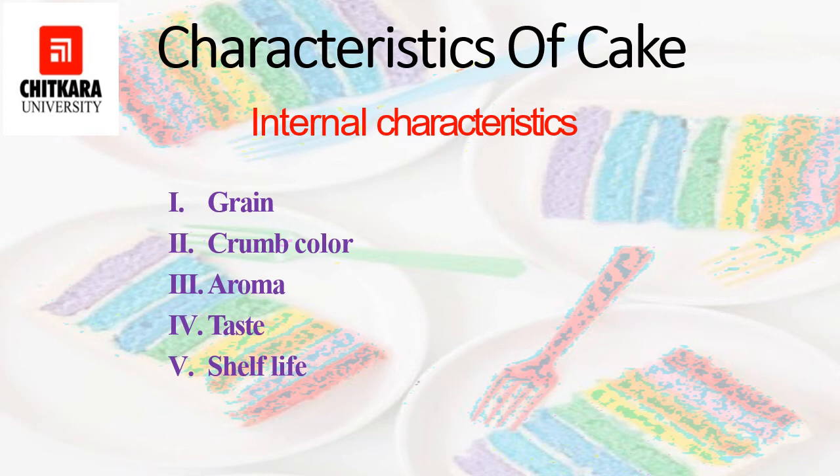Now, crumb color — crumb should have a lively, lustrous, and uniform color. It should be free from any streaks or dark patches. Gray, non-uniform, dark, light, or dull color of crumb will be undesirable.